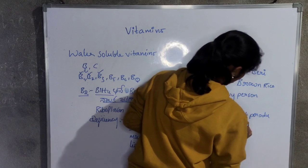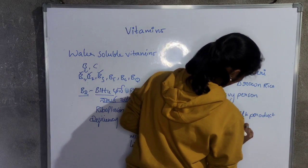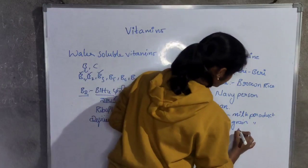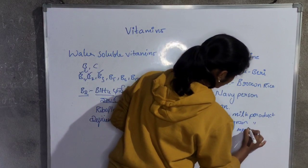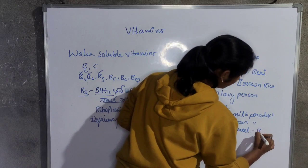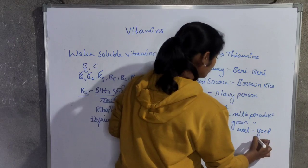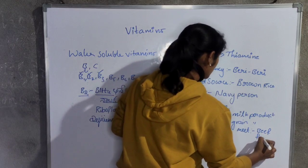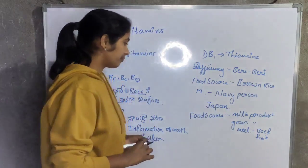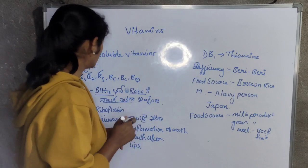Food sources for B2 include grain products, milk products, and meat — beef and mutton — and fish also contain a high amount of B2 vitamin. So this is about B1 and B2.